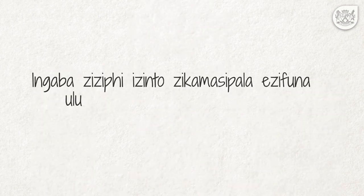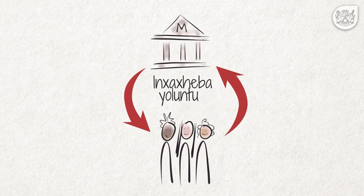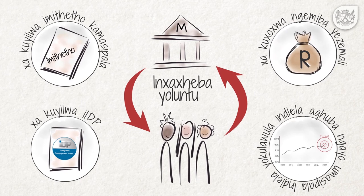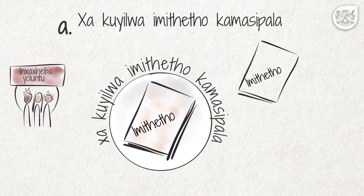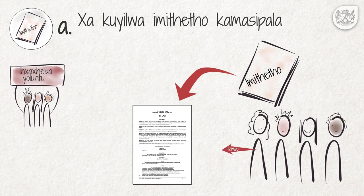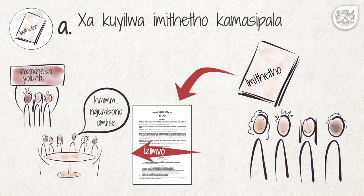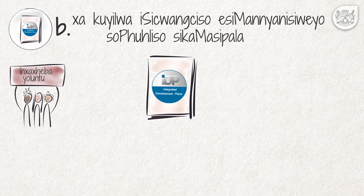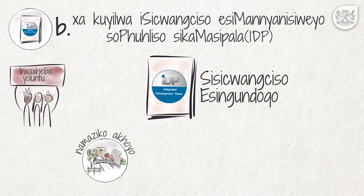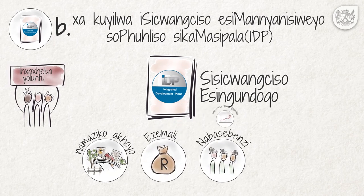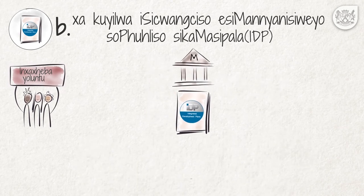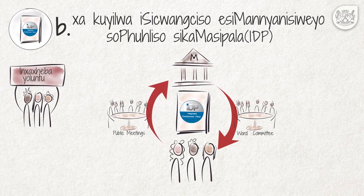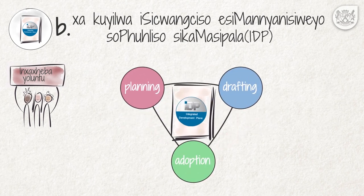Ingaba ziziphi izindozi kama sipala ezi funa uluntu ulutate nkakweba kuzo? Inkakaba yoluntu lwasikushalini iba lulekeka kukunuinkubo ezi tilezi kama sipala. Mzekelo: Akuyilwa imiteto kama sipala — yonke imiteto ekwechwayo kufuneka ipapashwe konukuze uluntu lukwazi kunika izimvo zalo. Ikansile kama sipala kufuneka iziko alasele zonke ezi zimvo. Akuyilwa isikwa ingriso esi manya nisiweyosopushliso sika masipala — iITP — sisi kwa ingriso esi ngundoko esi malunga na maziko akoyo, ezi mali, na basebenzi kunye nukukula kwazotokosho. Umasipala kufuneka bandakanye uluntu lwasiku shalini ngelela yeko mitize waate kunye nchanganiso ezi malunga nukukua ngisa, kukuyilwa nokusebenziswa kwakwe ITP.